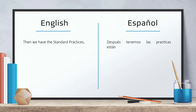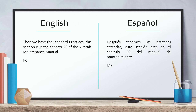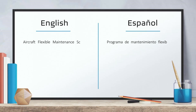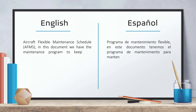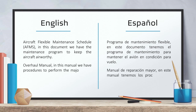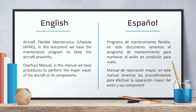Then we have the standard practices. This section is in chapter 20 of the aircraft maintenance manual. Power plant build manual — this is the maintenance manual of the engine. Aircraft flexible maintenance schedule — in this document, we have the maintenance program to keep the aircraft airworthy. Overhaul manual — in this manual, we have procedures to perform the major repair of the aircraft or its components.